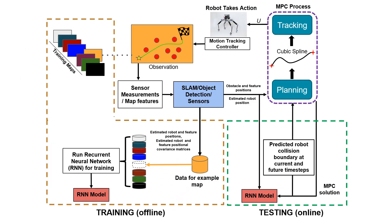Here we show the entire overview of our path planning architecture. Because we use RNNs, there is an offline training phase and an online testing phase. In the training phase, we have several different maps where obstacles are randomly distributed and the robot navigates from an initial pose to a final pose while avoiding all obstacles. At every time step, sensor measurements and map features are received and input to our SLAM and object detection system. We collect estimated robot and feature positions and covariance matrices, storing this information into a large database to train our RNN model. In the testing phase, the RNN outputs predicted robot collision boundaries at current and future time steps, represented as circles with radius equal to the major axis of the covariance ellipse.